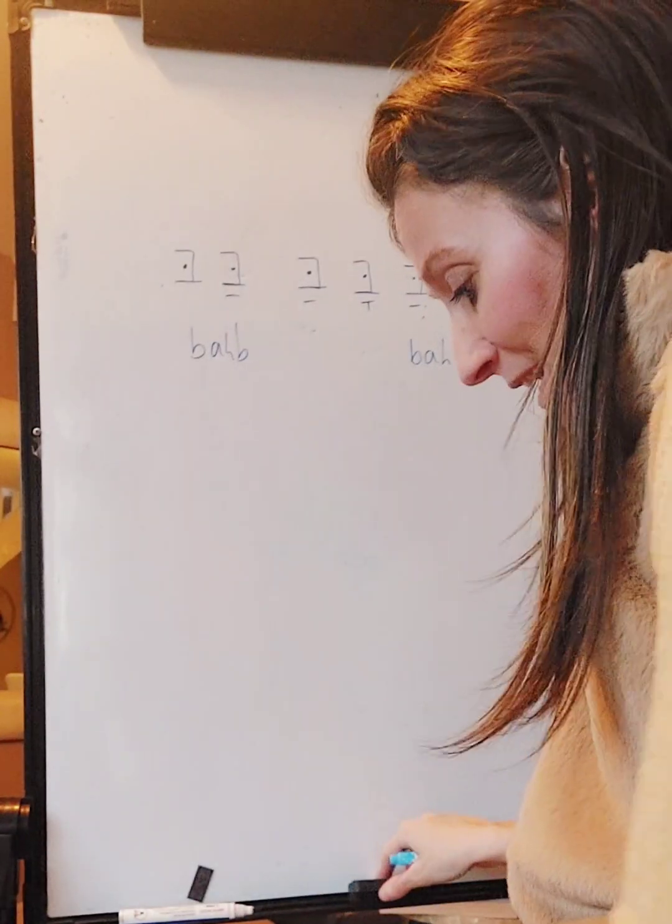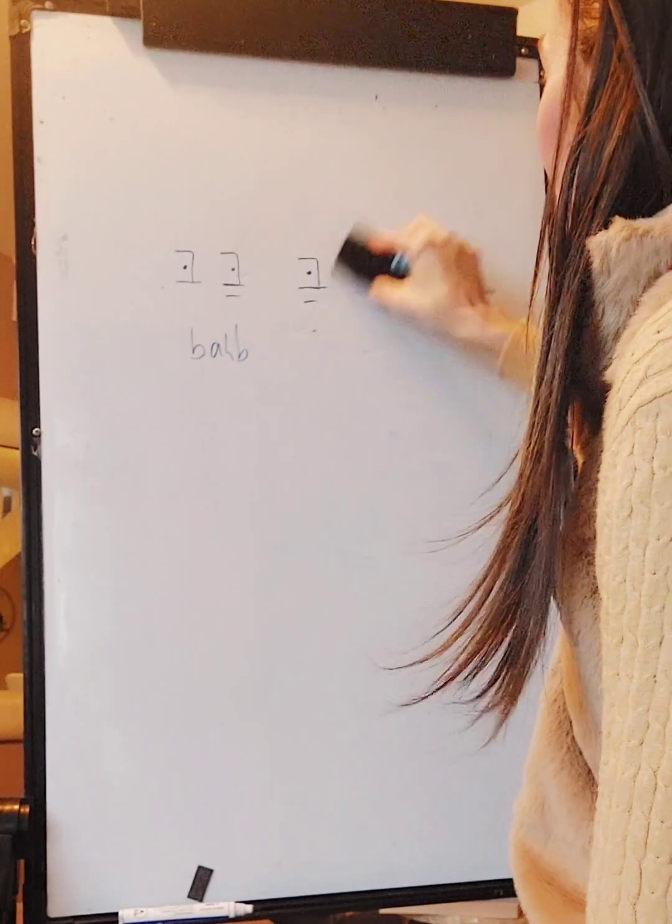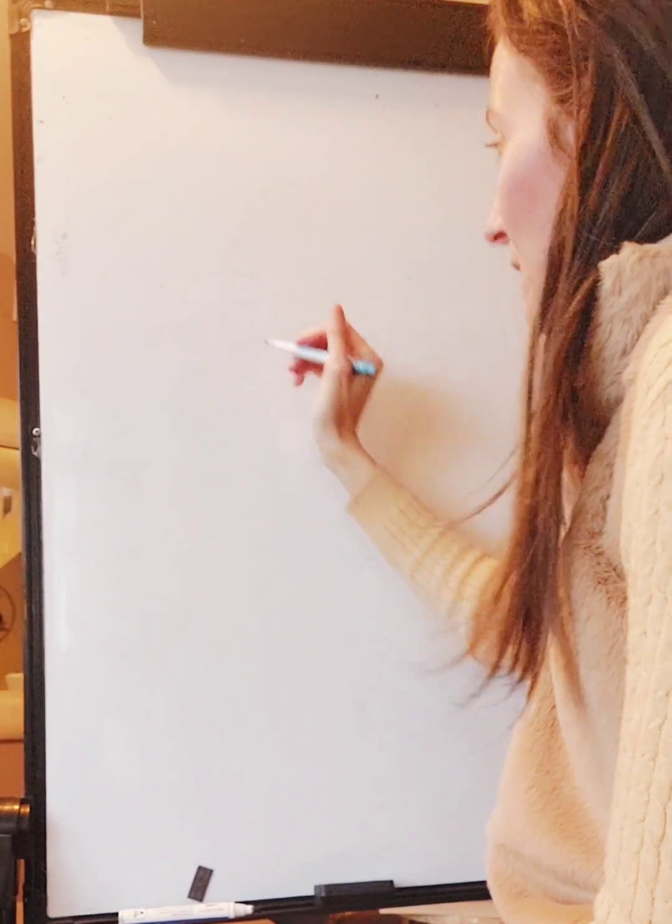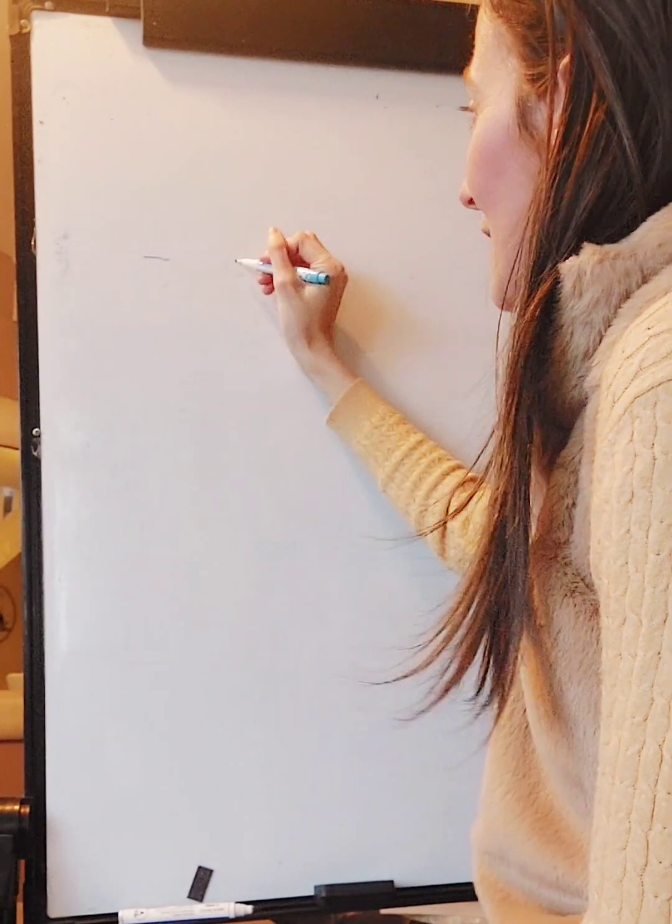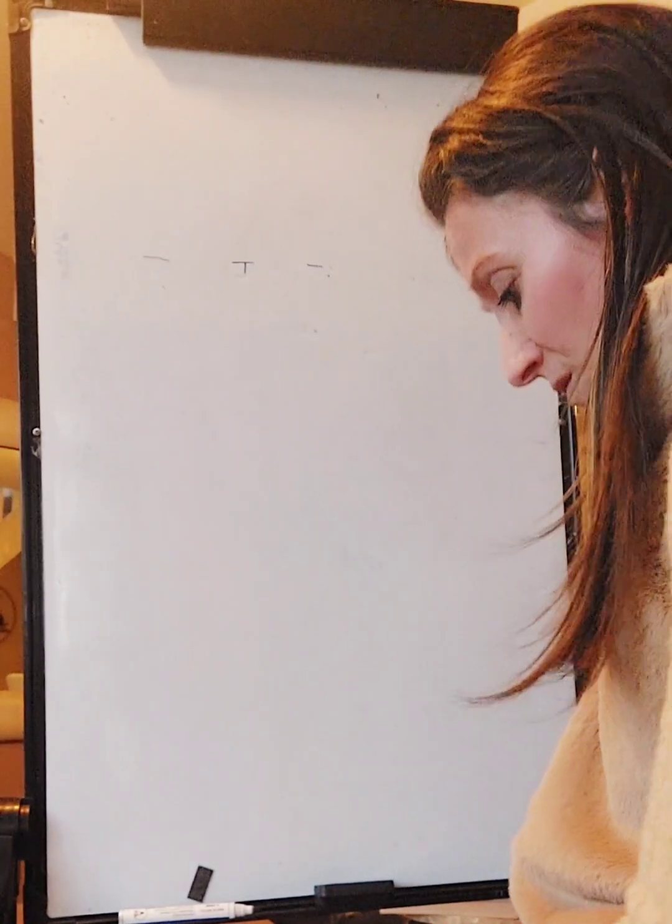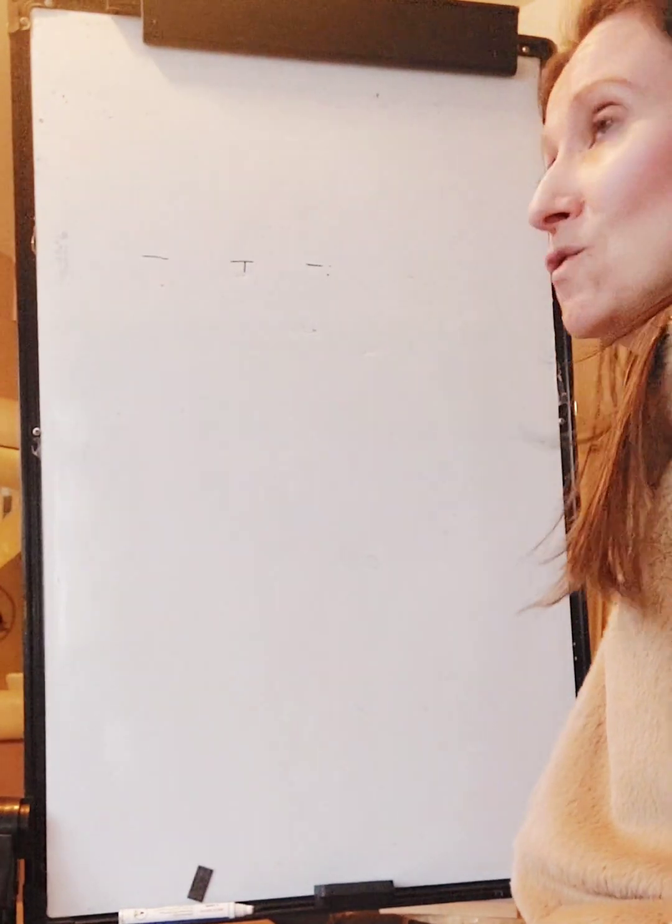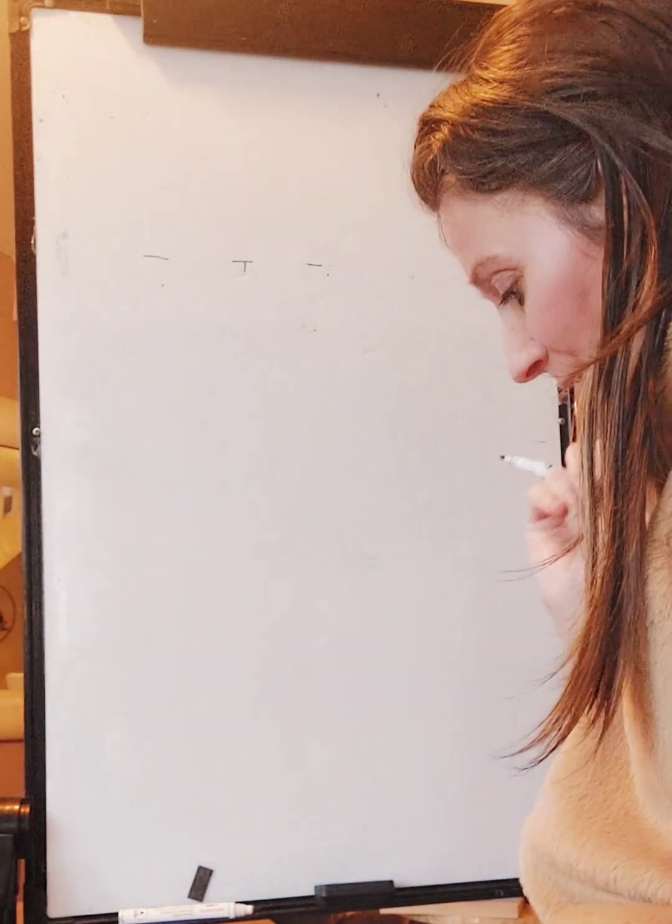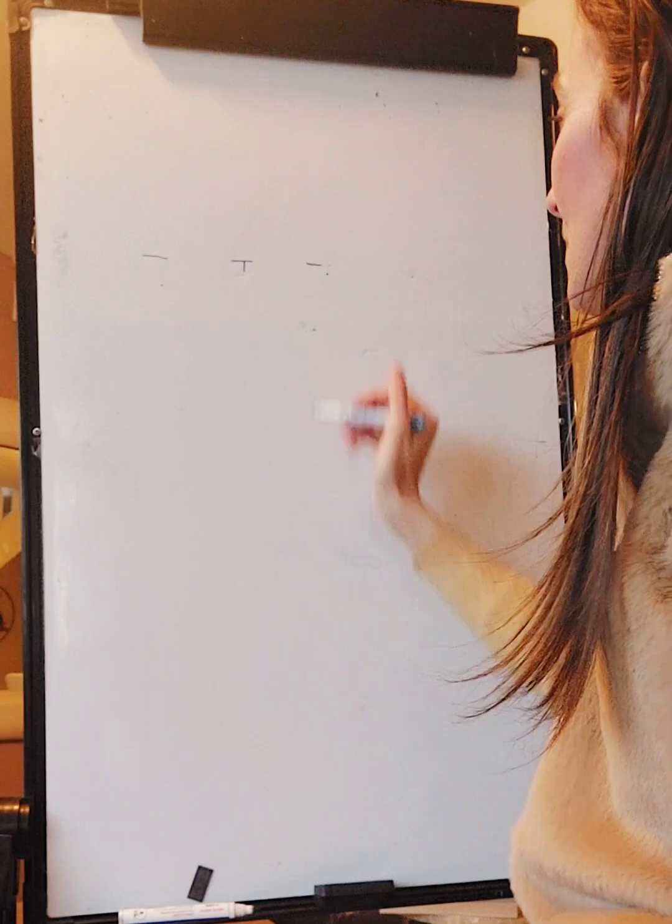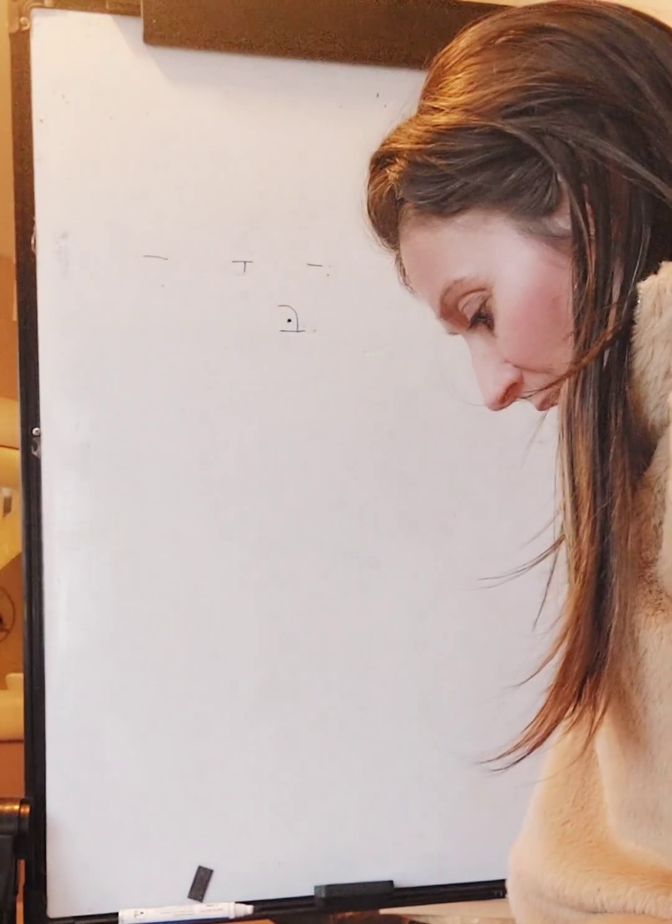Okay, so for the next exercise, I want you to write out the three forms of the vowel A. Can you remember the three symbols for the A vowel? Dash, dash with a little t, and dash with two dots. Now I want you to write the consonant B, the bet.